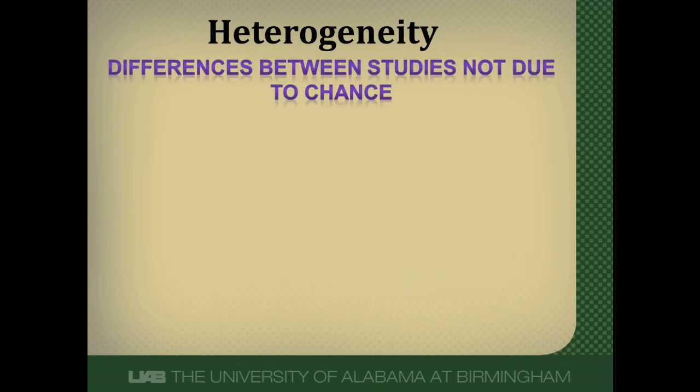Heterogeneity is differences between studies that are not due to chance. Chance will always play a role — even if we take the same group of patients or repeat a study over and over, results will be a little bit different. But heterogeneity gets at differences between studies that aren't just random chance happenings. There are two types of heterogeneity: clinical and statistical heterogeneity.